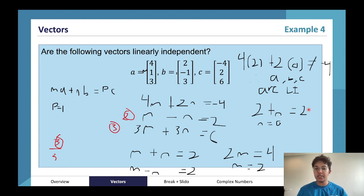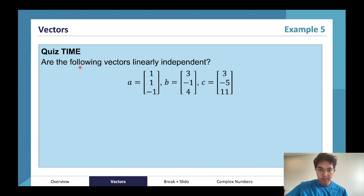So hopefully that makes sense. Just a general approach: multiply everything by m and n, then do some simultaneous equations with it on two of the equations, and then use the last equation to check if everything actually fits and works. Have a go at this one as well. I'll create a poll for this one.